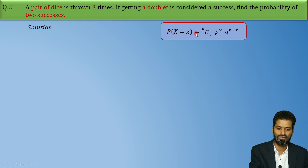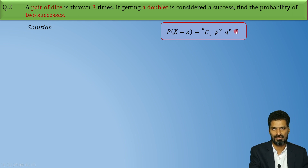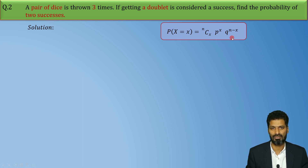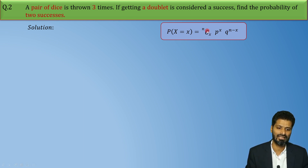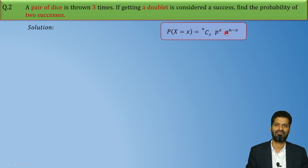The formula is: Probability of X equal to x is nCx, p raised to x, q raised to n minus x. Now what do we need to find? Probability of two successes. So we will use this formula. But to use this formula, first we need to find the values of N, P, and Q.